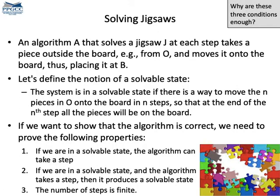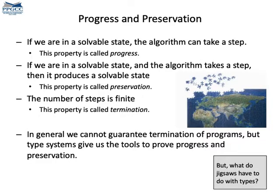To show that the algorithm solves the puzzle, we need to show that it has three properties. First, if the puzzle is in a solvable state, the algorithm needs to be able to take an action — this is called progress. Second, if the algorithm takes an action and changes the state, the new state must also be solvable — this is called preservation. Finally, the number of possible steps must be finite — this is called termination. In general, proving termination is undecidable, but type systems give us a way to reason about progress and preservation.